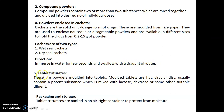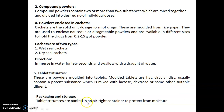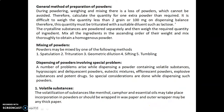The fifth class is tablet triturates, which are powders molded into tablets. Molded tablets are flat circular discs that usually contain a potent substance mixed with lactose, dextrose, or some other suitable diluent. Tablet triturates are packed in an airtight container to protect them from moisture.